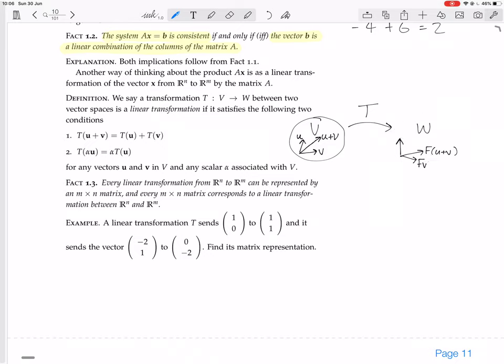Then, once we found out what Tu is and what Tv is, then actually what T of u plus v is, is given, it's specified, it's determined, because it's got to be the same as T of u plus T of v.